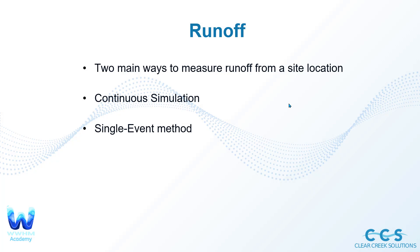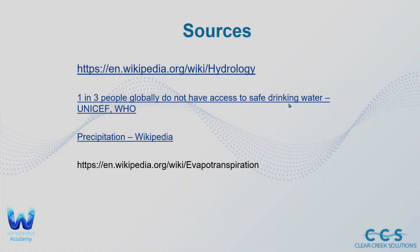There are two main ways to measure runoff from a site location when it comes to hydrologic engineering: continuous simulation modeling, which we have a video on, and single event method, which we also have a video on comparing the two. These are the two main ways to measure and track all of that water in stormwater modeling.